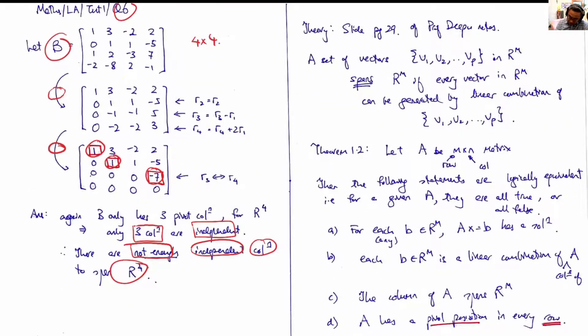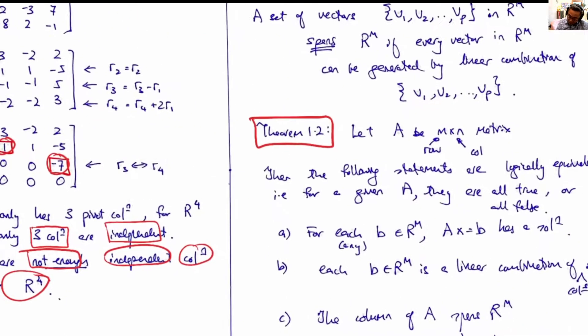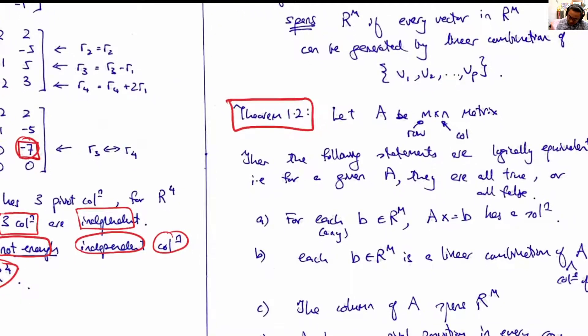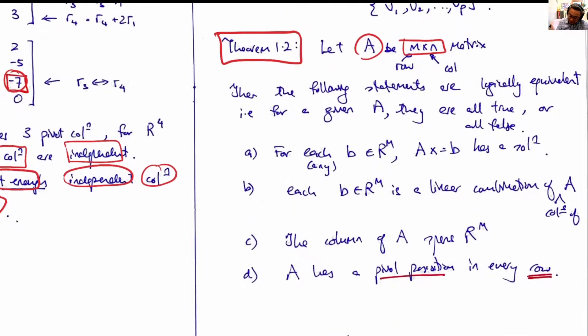Now, if you have problems understanding this question, please go through Theorem 1.2 of your slide. It says that, basically, given we have an A of m by n matrix, then the following statements are logically equivalent—all true or all false.